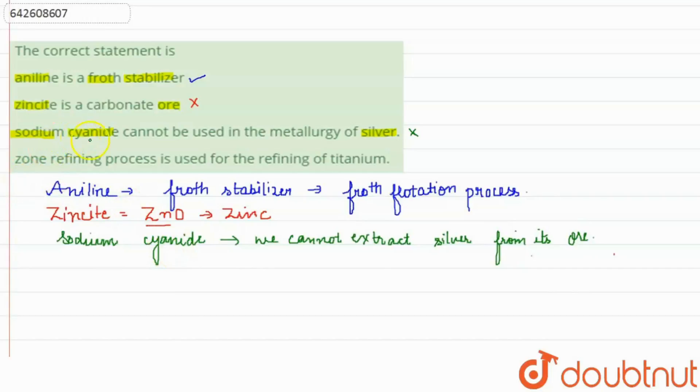So last statement is zone refining process is used for refining of titanium. So this statement is also incorrect statement. Why? Because zone refining process is used for refining of silicon and germanium.